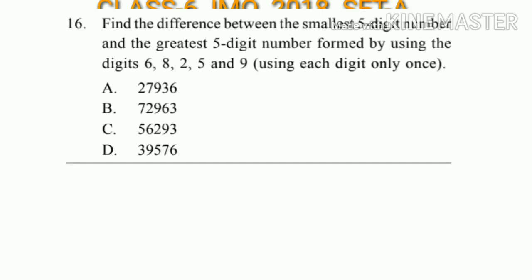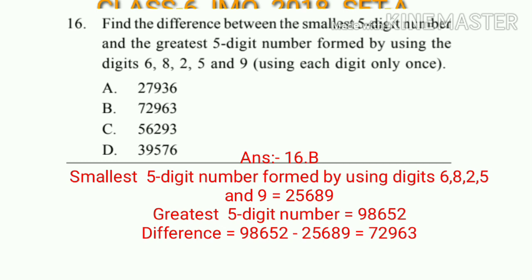Question number 16: Find the difference between the smallest and greatest five-digit numbers formed using the digits 6, 8, 2, 5, and 9, each digit used only once. The smallest five-digit number is 25,689 and the greatest five-digit number is 98,652. So the difference will be 72,963, which is option B.